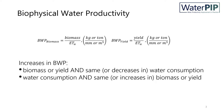Depending on whether biomass or yield is used for the calculation, there is the biomass water productivity or the yield water productivity. To increase this ratio, there are two ways: either by increasing the biomass or yield while maintaining water consumption stable or even decreasing it, or by reducing water consumption while maintaining or even increasing biomass or yield.